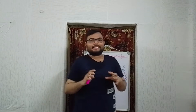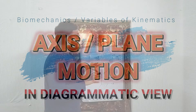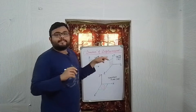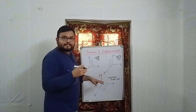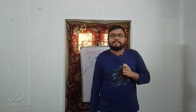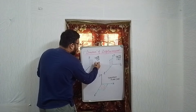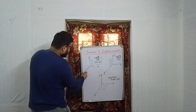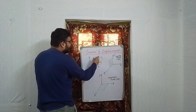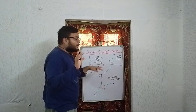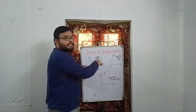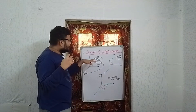Now let's summarize these movements with respect to axis and planes in a diagrammatic view. The frontal plane is also called the YX plane. In the frontal plane, abduction and adduction occur, and the axis perpendicular to this plane is the Z axis. A helpful memory trick: the frontal plane is the YX plane — Z is missing — so the movement occurs around the Z axis.